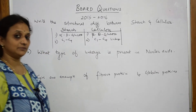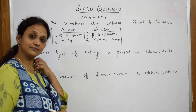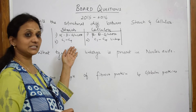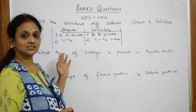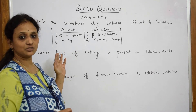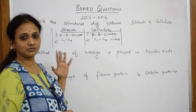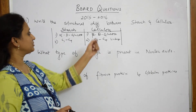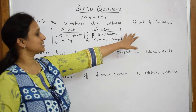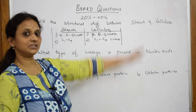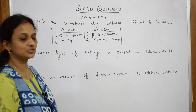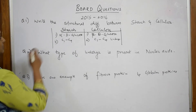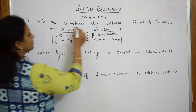Please watch the theory video where the structures are drawn. If you still have time, draw the structure and show the linkages. Both starch and cellulose contain approximately 2000 to 4000 glucose units. This structural detail is worth one mark.